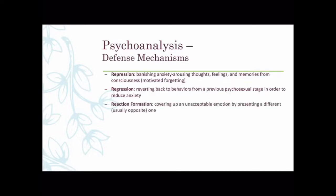Reaction formation is covering up an unacceptable emotion by presenting a different one — usually the opposite. When you're mad and it's not appropriate to act out, you might instead act really overly friendly to compensate for that negative feeling. Projection involves taking your own characteristics or impulses — usually negative ones — and claiming that somebody else has those impulses, even if they don't. In relationships, this sometimes happens with cheating: once a partner cheats, they can become more suspicious of their partner and believe their partner is cheating on them.